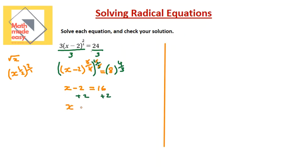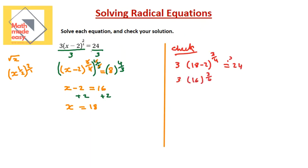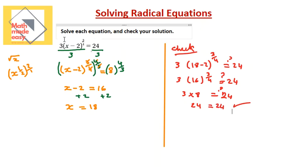Now we check the solution. Substituting x = 18: 3 times (18 minus 2) to the power of 3 over 4 equals 3 times 16 to the power of 3 over 4. The fourth root of 16 is 2, and 2 cubed is 8, so this is 3 times 8, which equals 24. And 24 equals 24 — our solution checks out. In exponential form, isolate the base expression, then raise both sides to the reciprocal of the exponent to cancel it.